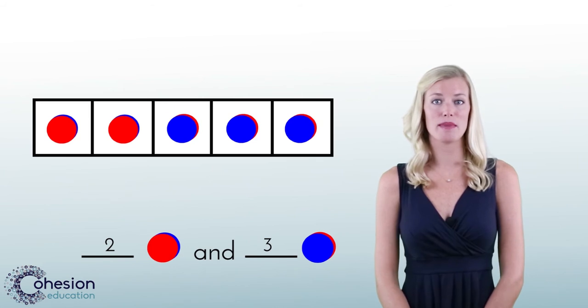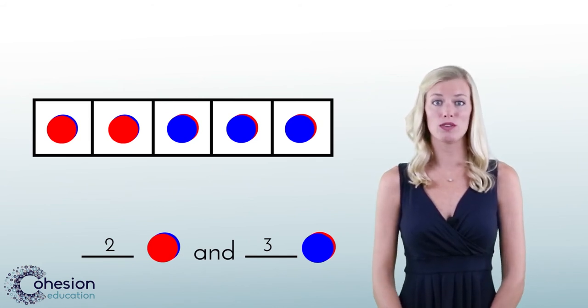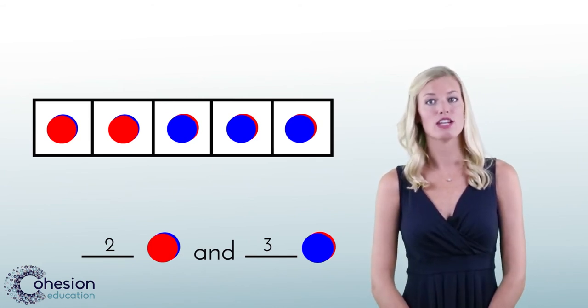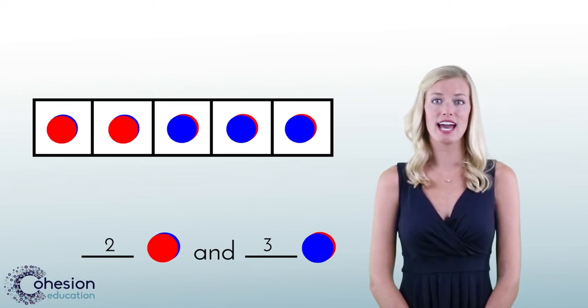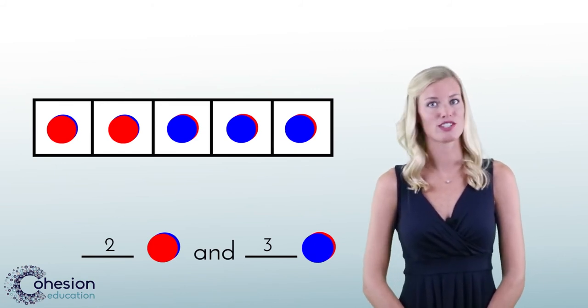Before finding various ways to make the number five, be sure that there are only five counters to begin with. Students often get this wrong just for mistakenly having an incorrect amount of counters to start with.